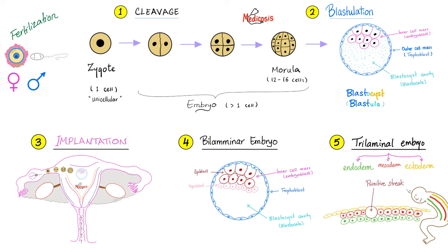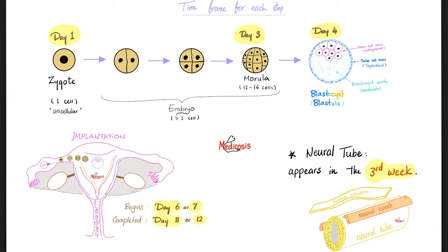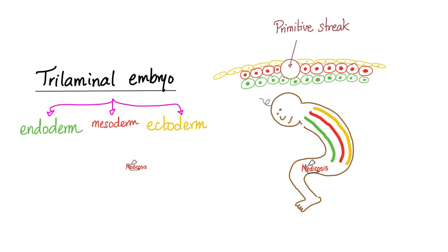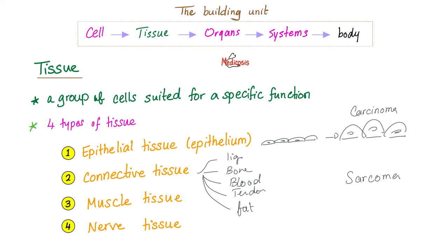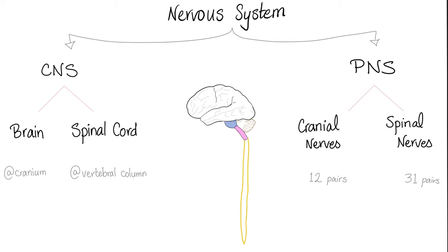Fertilization, cleavage, blastulation, implantation, bilaminar embryo (epiblast and hypoblast), trilaminar embryo (endoderm, mesoderm, ectoderm). The ectoderm in the third week gives you your nervous system, under the influence of the primitive streak. Nerve tissue comes from the ectoderm — your nervous system: CNS (brain and spinal cord) or PNS (cranial nerves and spinal nerves). The spinal cord has segments: cervical, thoracic, lumbar, sacral, and coccygeal.